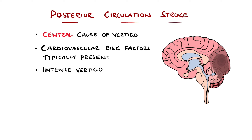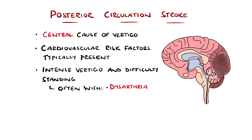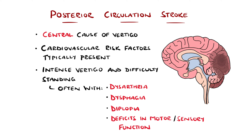Intense vertigo, nausea, and vomiting are common, and often patients with a posterior circulation stroke will be unable to stand even with their eyes open. There will typically be other signs like dysarthria, dysphagia, diplopia, or deficits in motor or sensory function, but this is not always the case.